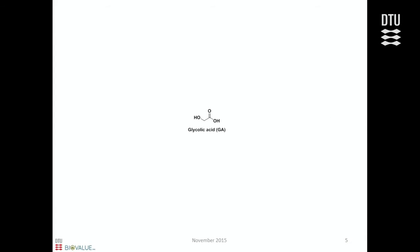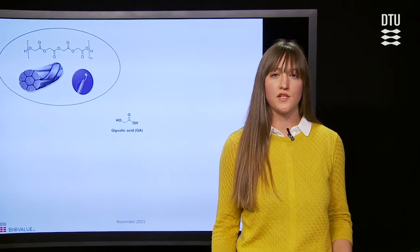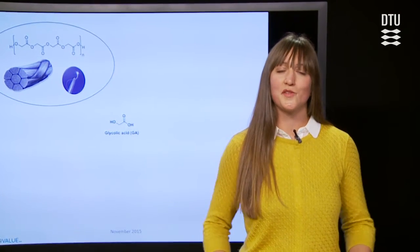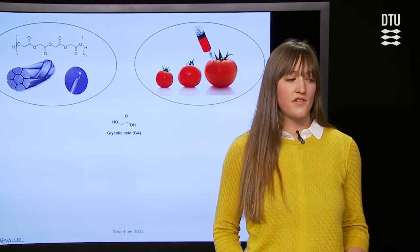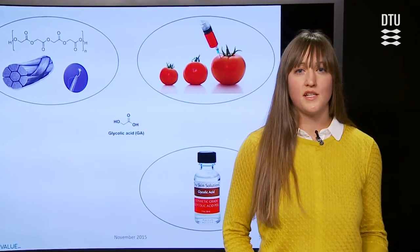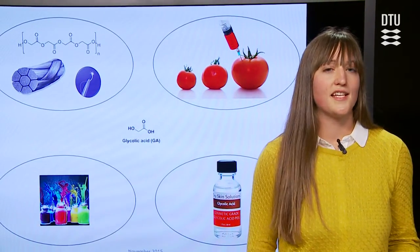Glycolic acid is used in many different industries. For example, the polymer of glycolic acid is used in the medical industry as a self-absorbable suture in operations, as a food preservative, in the cosmetic industries for anti-aging products and acidic peelings, and in the dye industry.